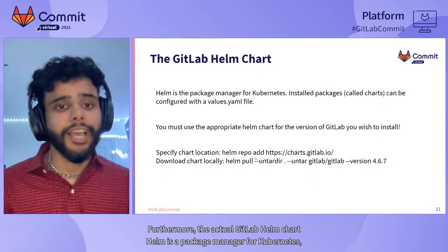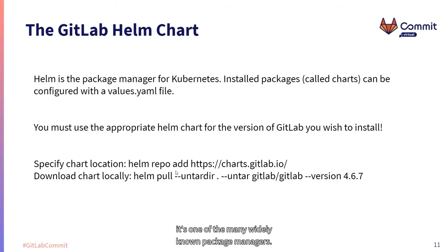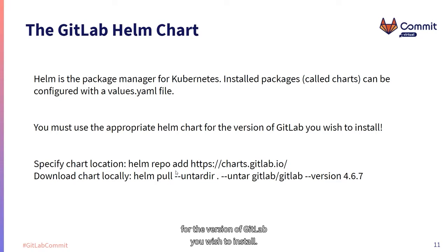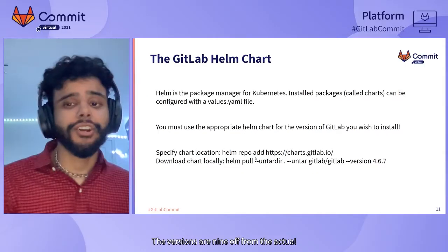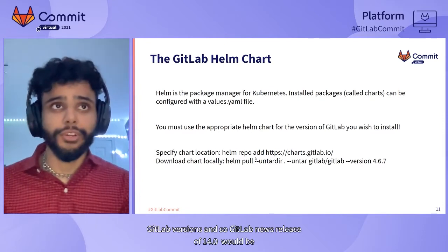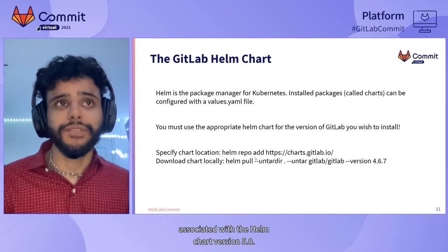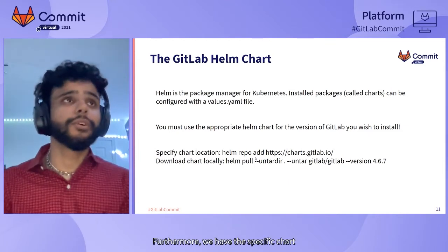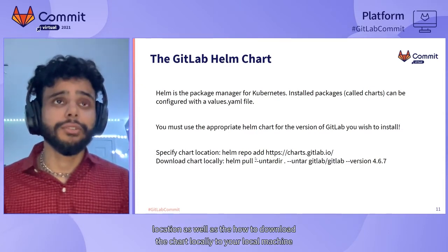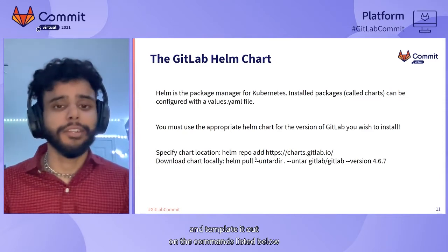The actual GitLab Helm chart: Helm is a package manager for Kubernetes and one of the many widely known package managers. It allows you to install various packages called charts — keeping with Kubernetes nautical terms — in the cluster and configure them with a values.yaml file. You must use the appropriate Helm chart for the version of GitLab you wish to install. The versions are nine off from the actual GitLab versions, so GitLab's release of 14.0.0 would be associated with Helm chart version 5.0. The chart location and download commands are listed below.